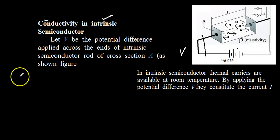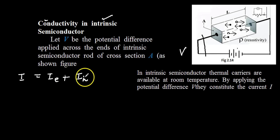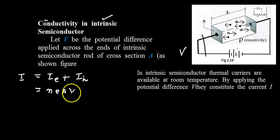In case of an intrinsic semiconductor, the total current can be written as the electron current plus the hole current. The expression for current is obtained from the drift velocity. The electron current IE is written as N·E·A·Ve, where Ve is the drift velocity of the electron and N is the number density.